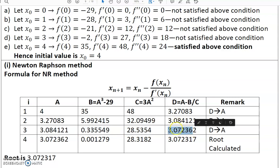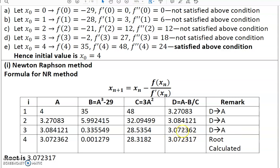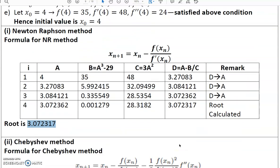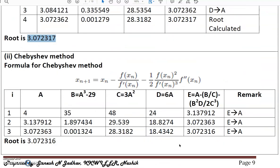In iteration 3, substituting a = 3.08412, b and c are calculated and a new d is obtained. Only one digit matches with the previous iteration, so we continue. In iteration 4, d = 3.072317. Comparing with the previous iteration, the values match up to three decimal places, so the root is 3.072317. Further iterations can be done if more accuracy is required.